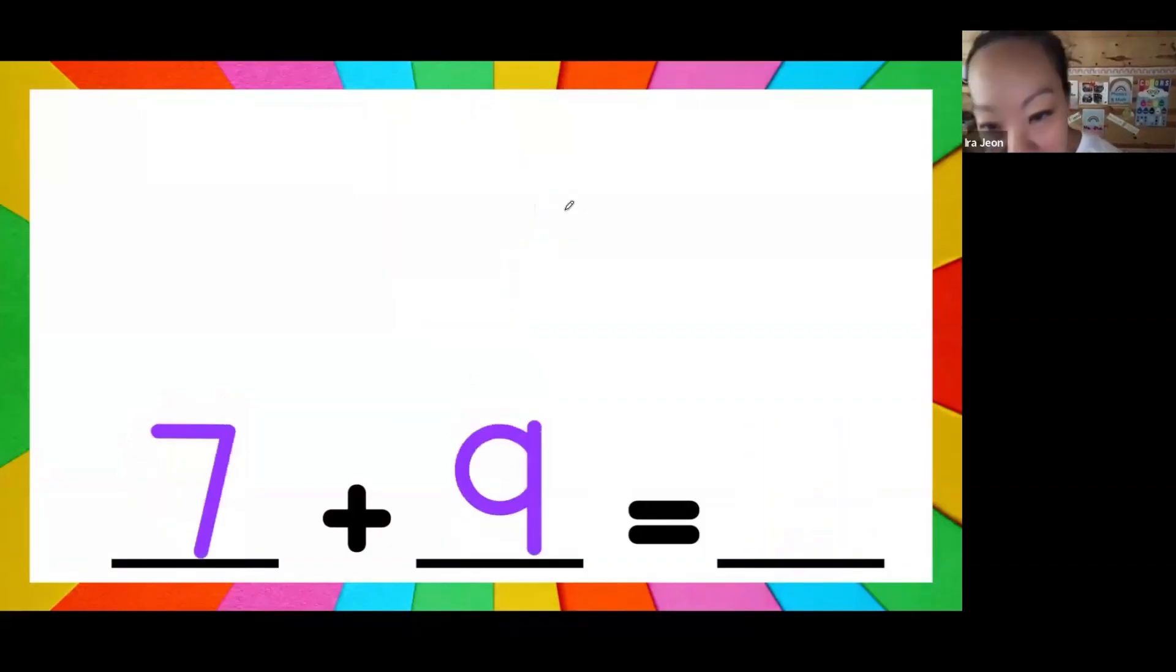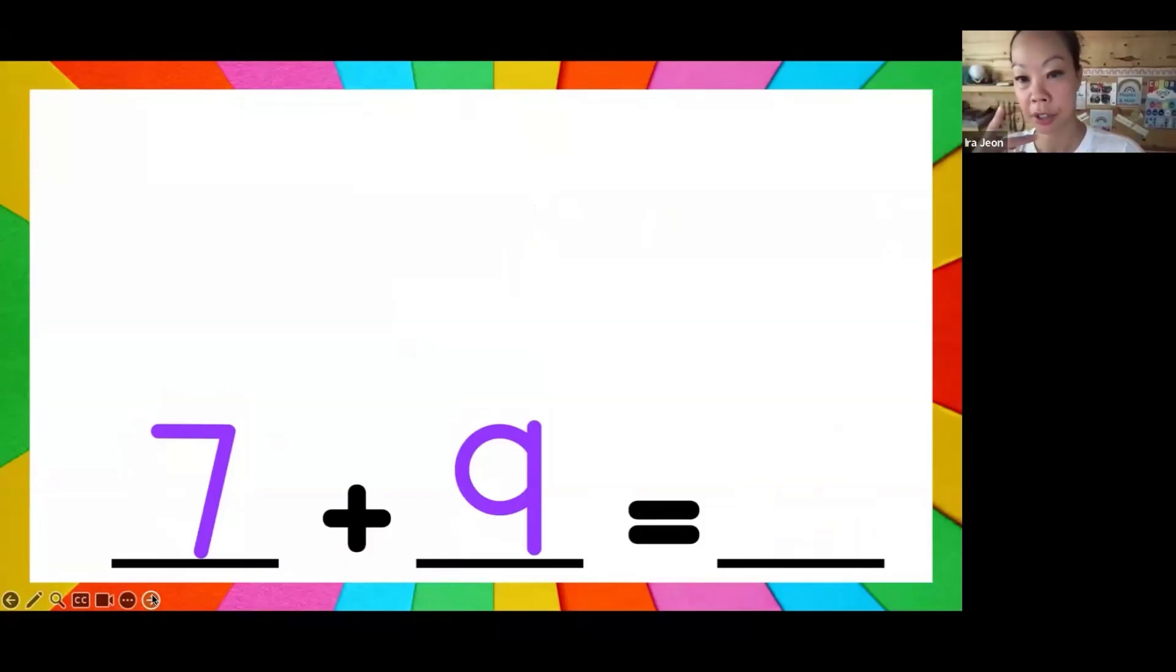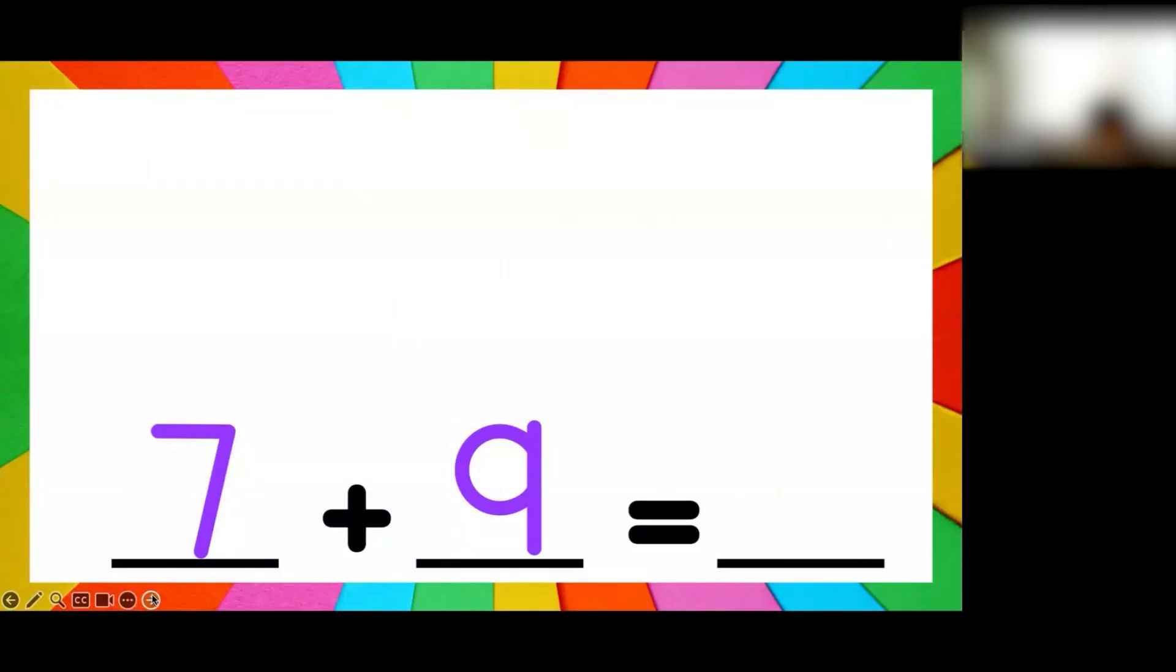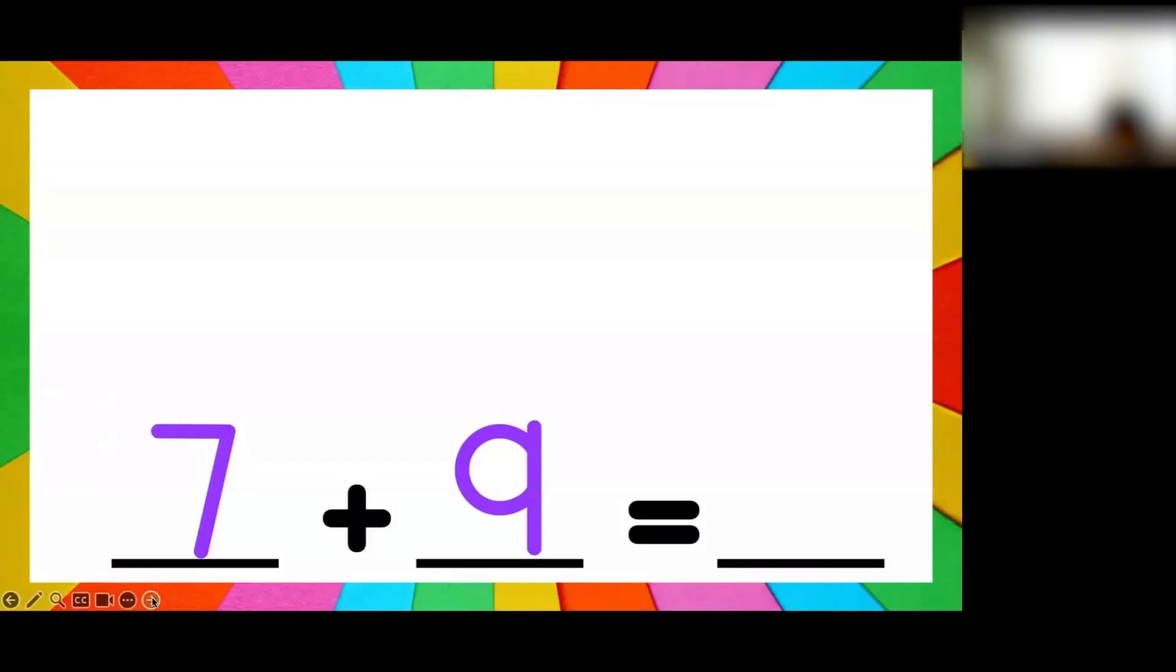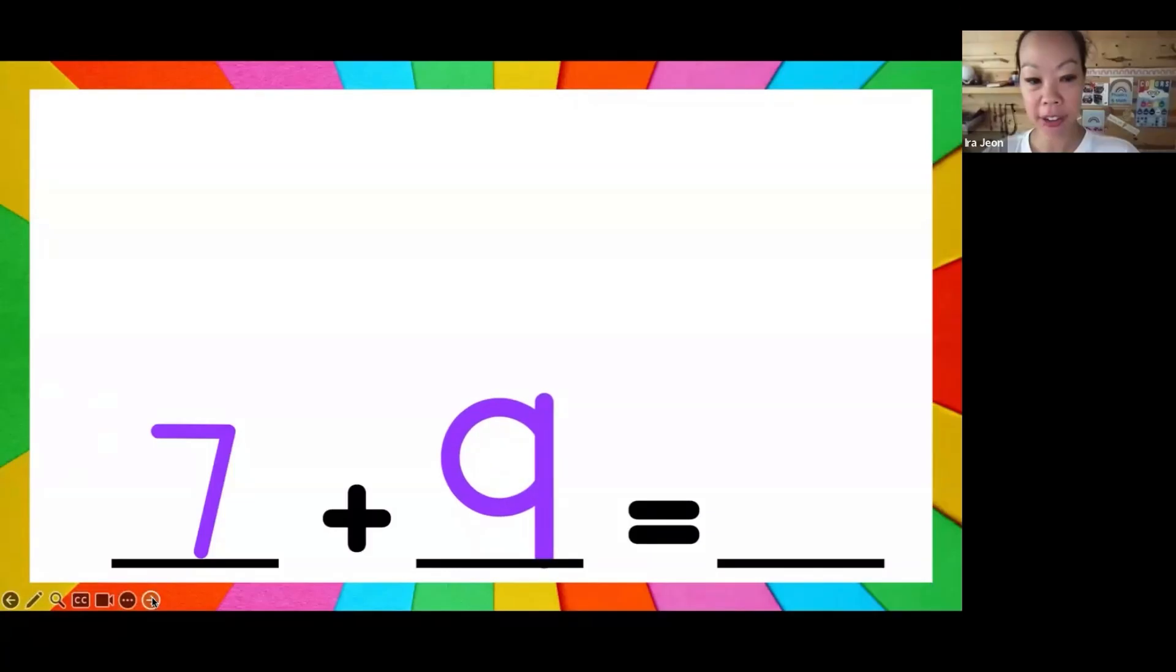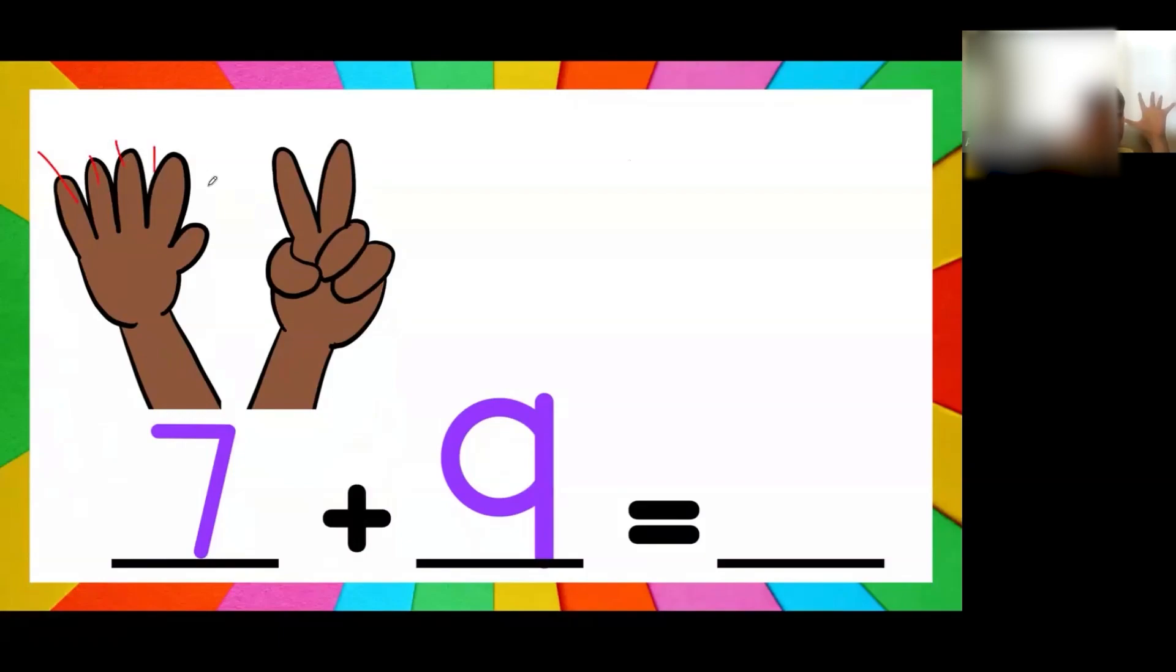Let's try another one. If I have 7 plus 9, what number should I start with? Hey Dan, can you tell me what number I start with here? Eight? You must be doing it mentally, let's see if he gets the right answer. Okay, let's try it together. What number is bigger, 7 or 9? Nine. Okay, hold up seven fingers and then count on after 9: 10, 11, 12, 13, 14, 15, 16.